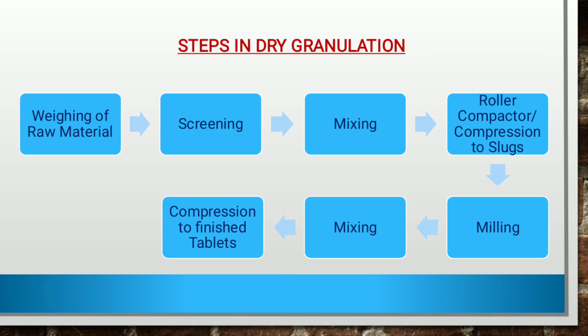In weighing, all the active ingredients as well as excipients are weighed accurately. Then comes sieving or screening, which reduces particle size and ensures uniform mixing due to similar particle size, and also increases surface area. Different sieves can be used for this purpose. Then comes mixing, which is performed to achieve optimum mixing of different ingredients for slugging. Depending upon the formulation, mixing can be between active ingredient and diluent, or active ingredient, diluents, plus disintegrants. Equipment generally used for mixing includes sigma mixer, cone mixer, etc.